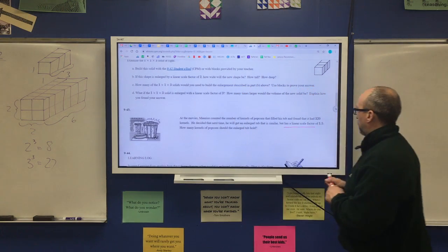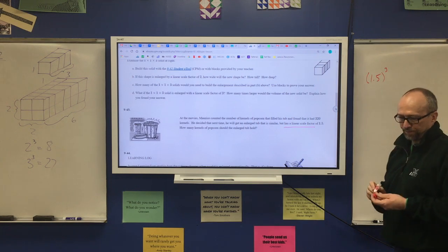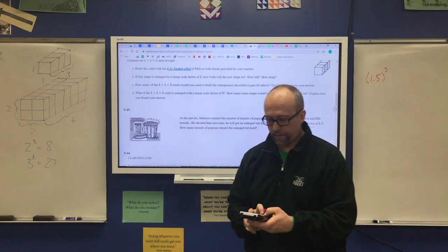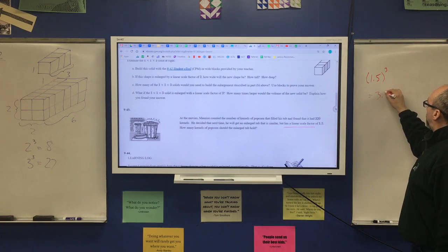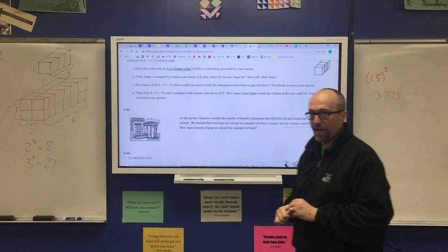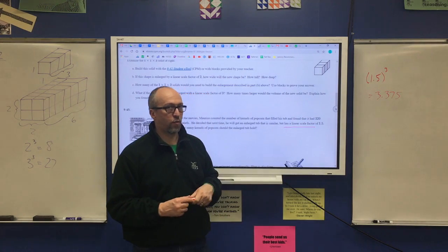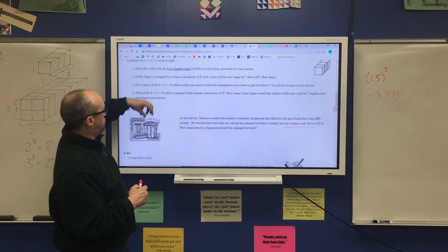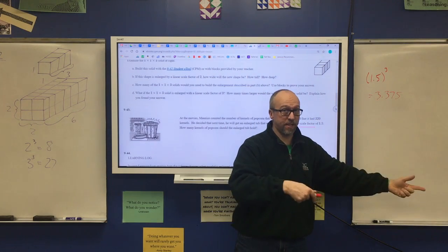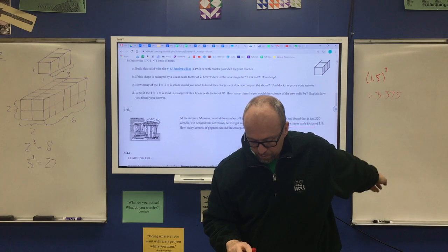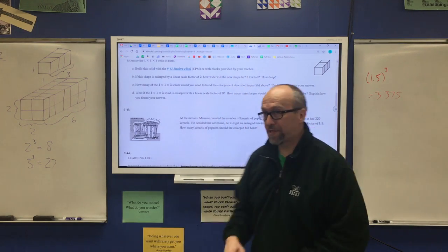If it's 1.5, I have to take that to the third power. And when I get my handy-dandy desmos calculator out, and I take that to the third power, I get 3.375. That really doesn't matter what that decimal is as a fraction. But what they're saying is this. If it held 320 kernels of popcorn in the original size bucket, then the new bucket will have 3.375 times as many kernels. So, I'm going to take that number that I just wrote down, 3.375, and I'm going to multiply it by 320, and I get 1,080.